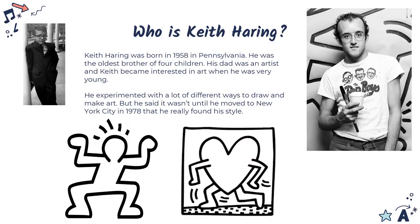Who is Keith Haring? Keith Haring was born in 1958 in Pennsylvania. He was the oldest of four children — he had three little sisters. His dad was an artist and Keith became interested in art when he was very young. He experimented a lot with different ways to draw on different types of art as he grew up, but he said it wasn't until he moved to New York City in 1978 that he really found his style.